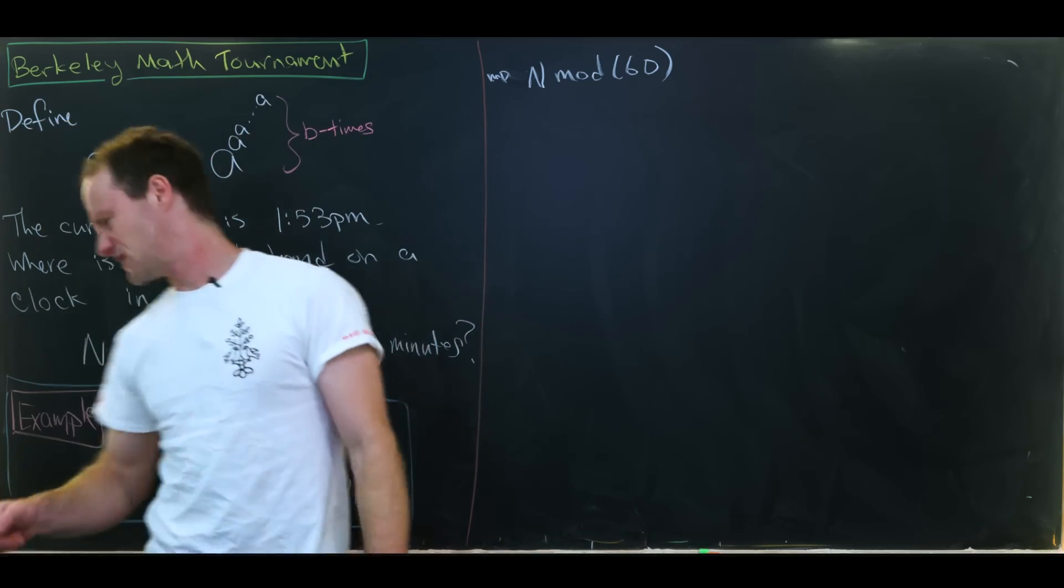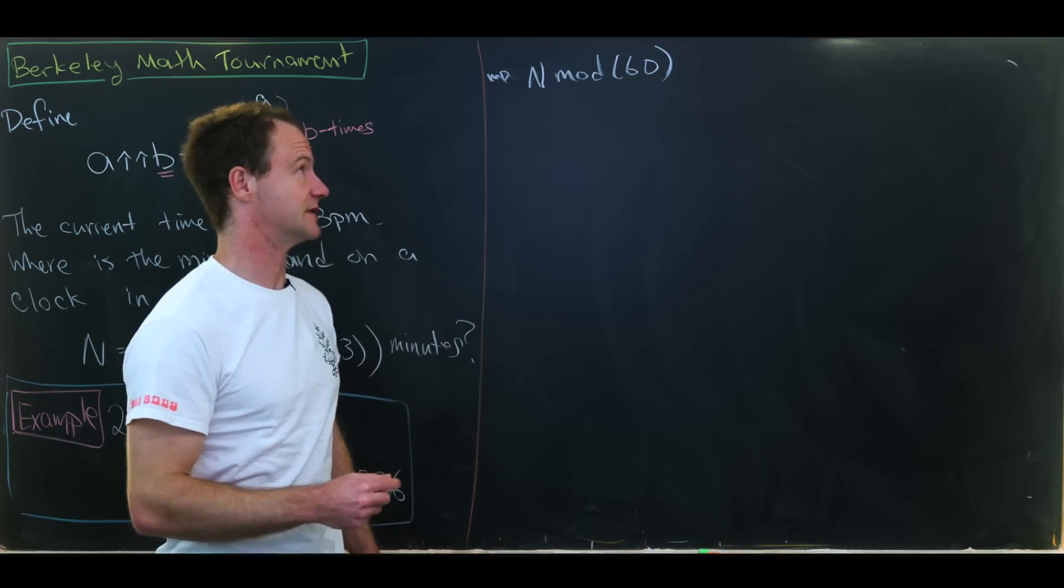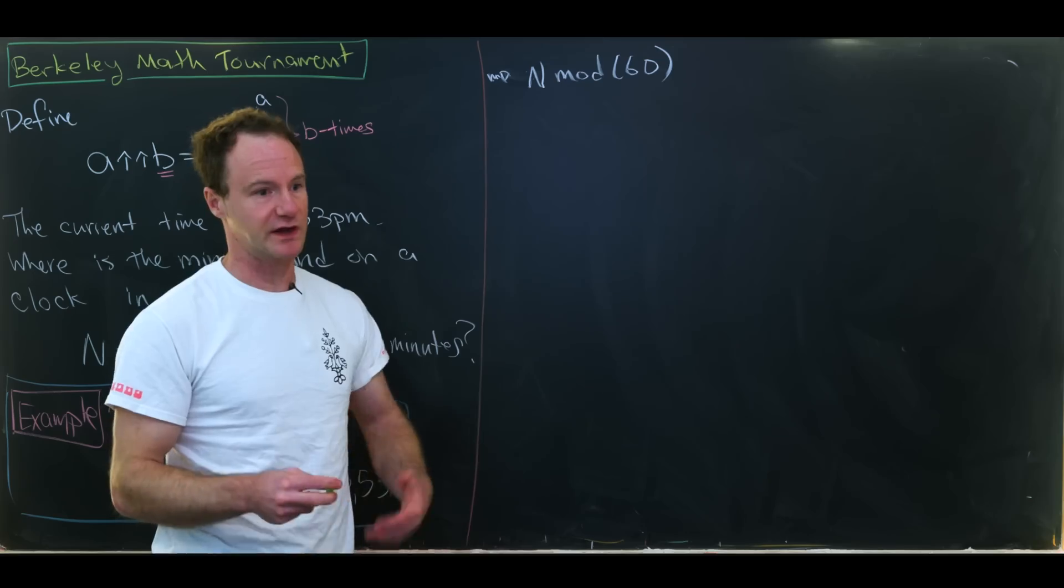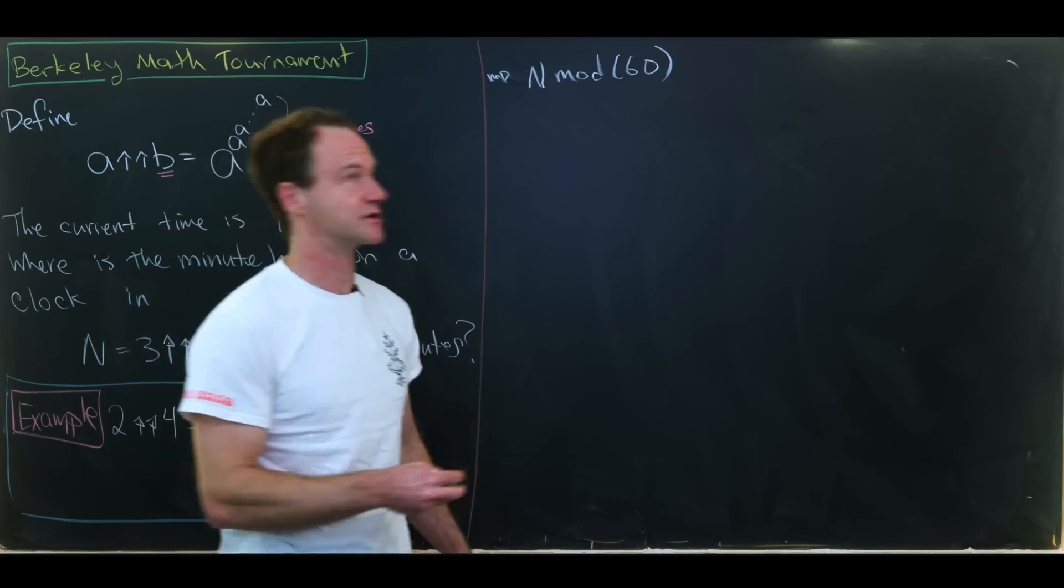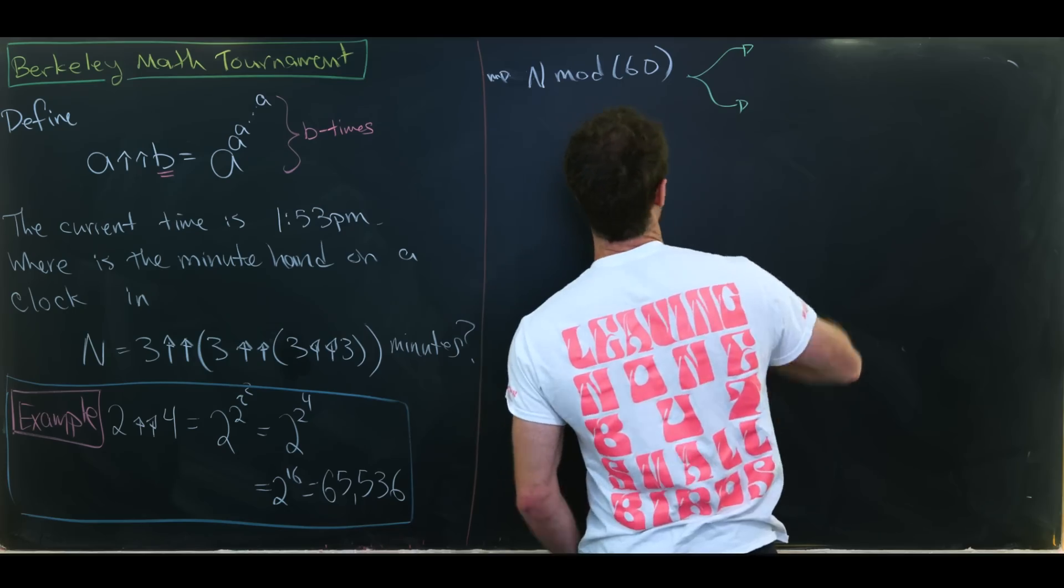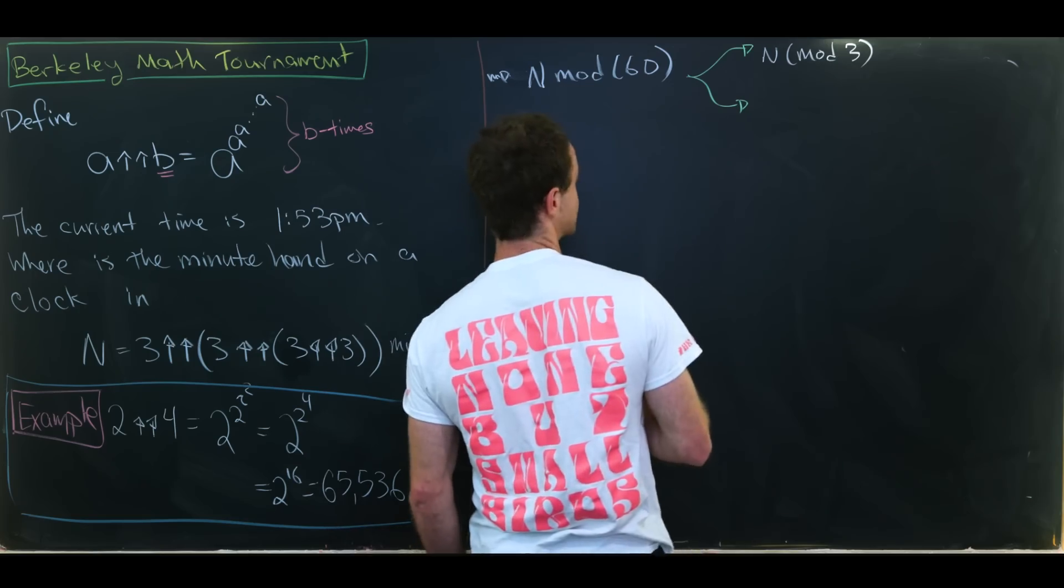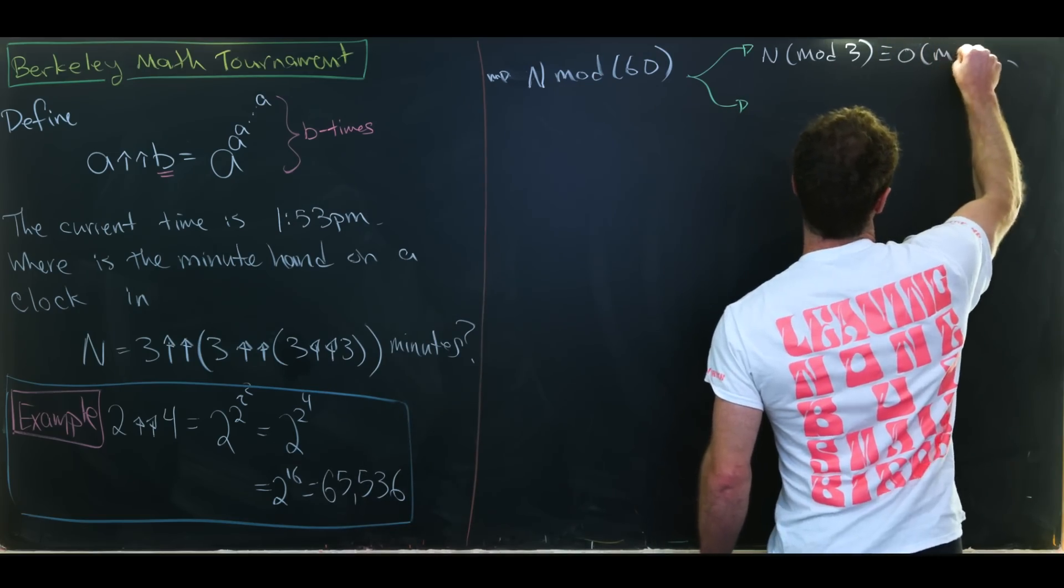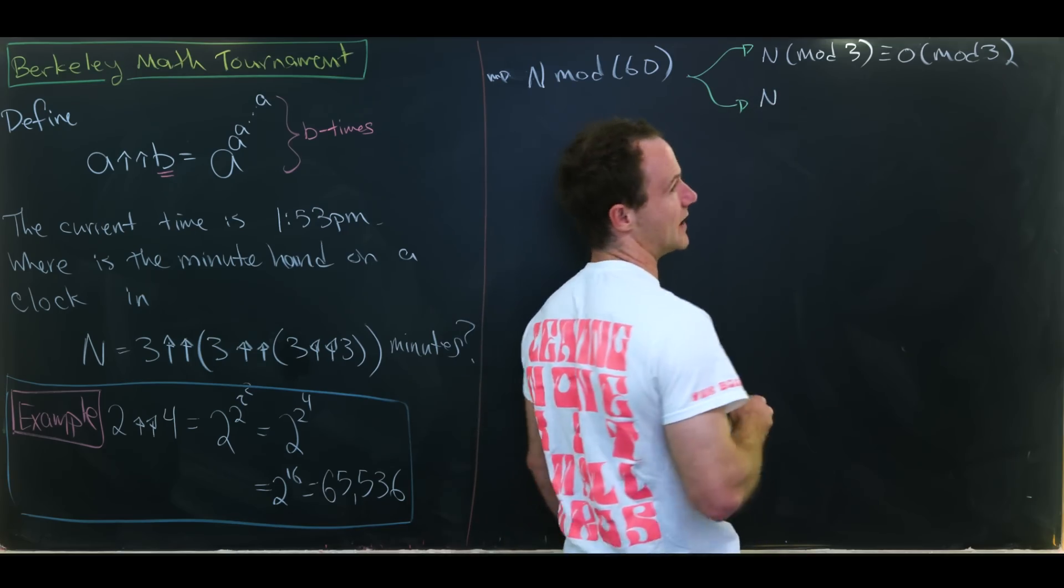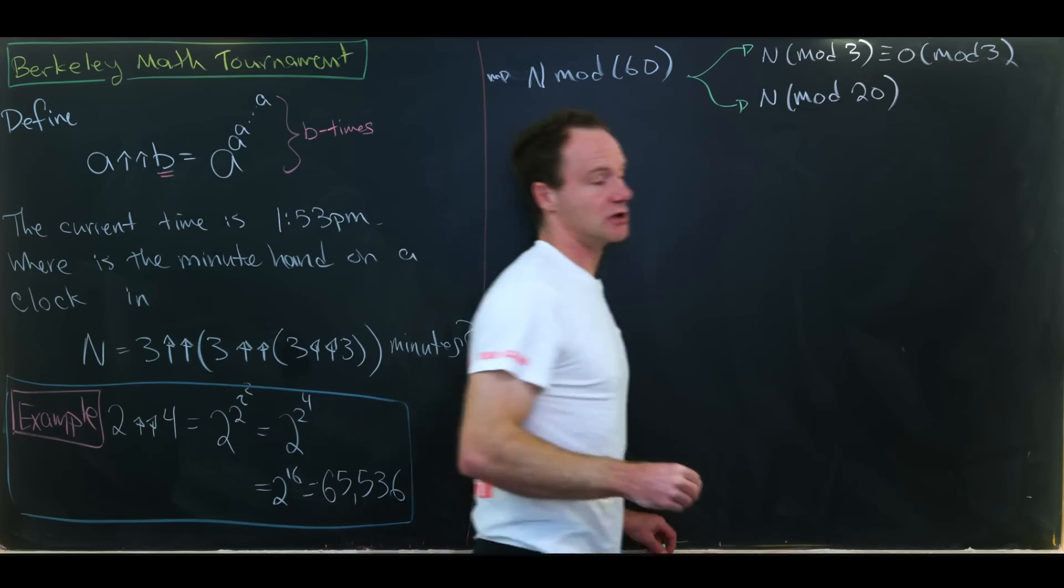But let's notice that this number that's building this whole thing is the number 3 which is not relatively prime to 60. So we can't use our favorite tool when working with exponentiation mod N which would be Euler's theorem. So that probably means we need to split this thing off and work N mod 3, which is actually clearly equal to 0 mod 3, and then also work mod 20. So we want to reduce N modulo 20.